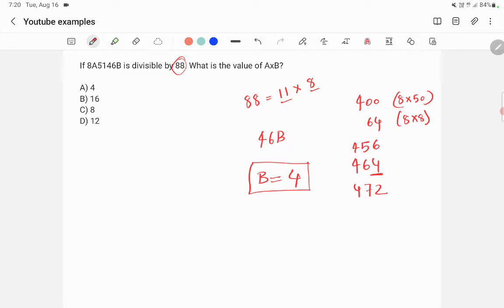For the divisibility rule of 11, you need to take the sum of alternate digits and subtract them. That is: (8 + 5 + 4 + b) - (a + 1 + 6). The value of this will be divisible by 11.